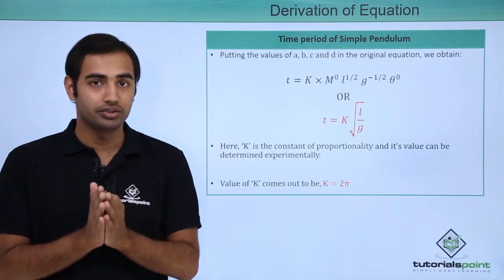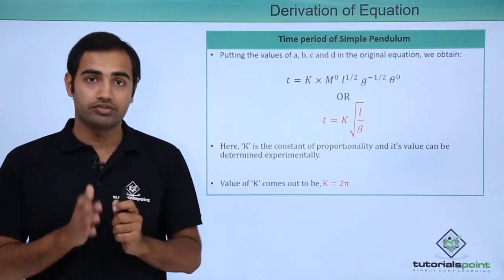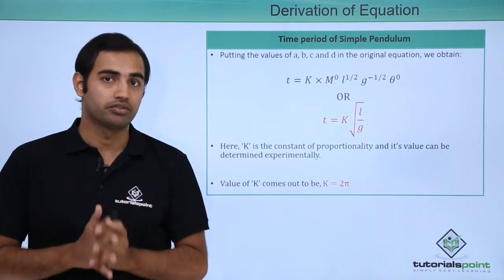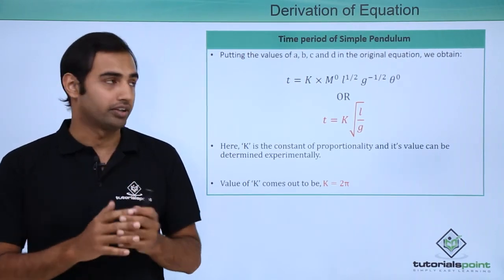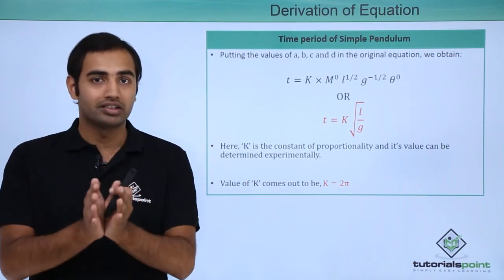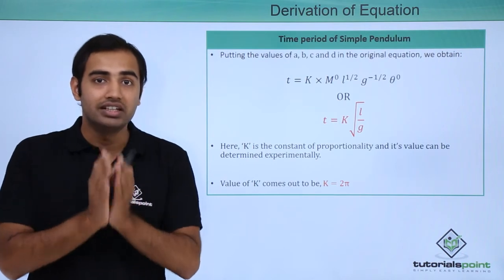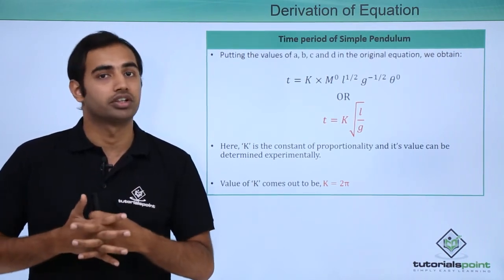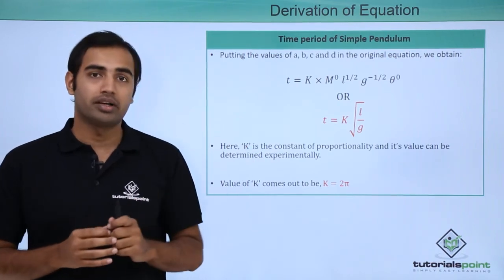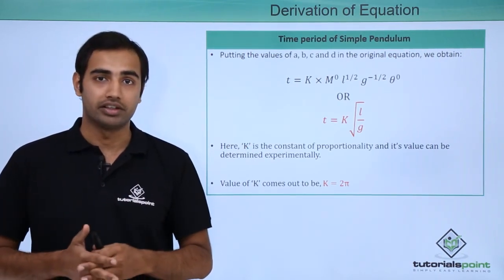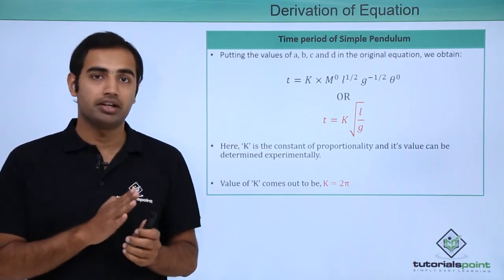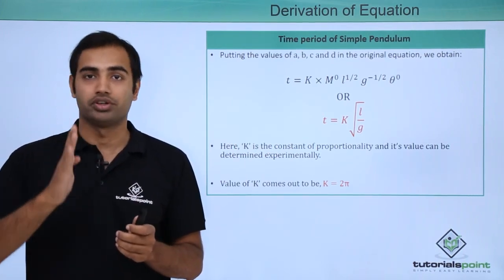You must understand here that the time period of a simple pendulum does not depend on the mass of the bob, does not depend at all on the temperature of the room — it only depends on two factors: the length of the string and gravitational acceleration. So the method of dimensional analysis is a very neat way to derive equations among physical quantities. The value of k cannot be obtained by this method and can only be obtained experimentally, which comes out to be 2 pi. So the equation ultimately becomes T is equal to 2 pi multiplied by the square root of l by g.